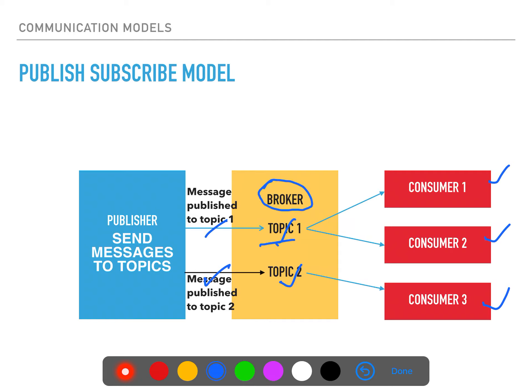A good example is a patient wearing a smartwatch that tracks body temperature, heartbeat, and environmental (room) temperature. A doctor subscribes to topic 1 and receives body temperature and heartbeat data, while an environmentalist subscribes to topic 2 and receives room temperature data. From the same device, data is published to two different topics for different consumers. This is the publish-subscribe model.